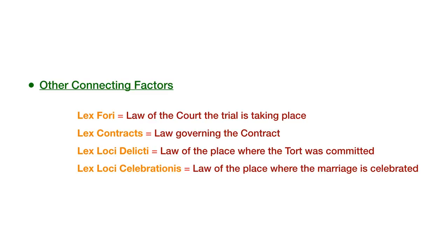Primarily speaking, the connecting factors are a multitude of factors that have to be considered. Besides nationality or domicile, there is lex fori, or the law of the court where the trial is taking place; lex contractus, the law governing the contract itself; lex loci delicti, the law of the place where the tort was committed; or in some instances, lex loci celebrationis, or the law of the place where the marriage is celebrated. What you might understand from these different modes of connecting individuals is that not only is it on a case-by-case basis, but it depends on the person, the country, as well as the wrong that is purported.